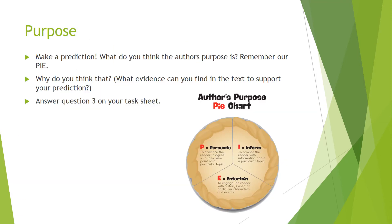The next thing I want you to do is make a prediction about the author's purpose. You can use the PIE chart - which stands for Persuade, Inform, or Entertain. Do you think the author is trying to persuade us, inform us, or entertain us? Why do you think that, and what evidence can you find in the text to support your prediction? Pause the video and go and answer question three on your task sheet, then come back and continue on.